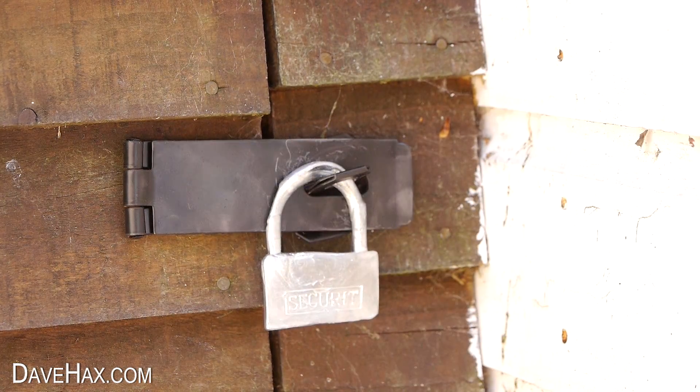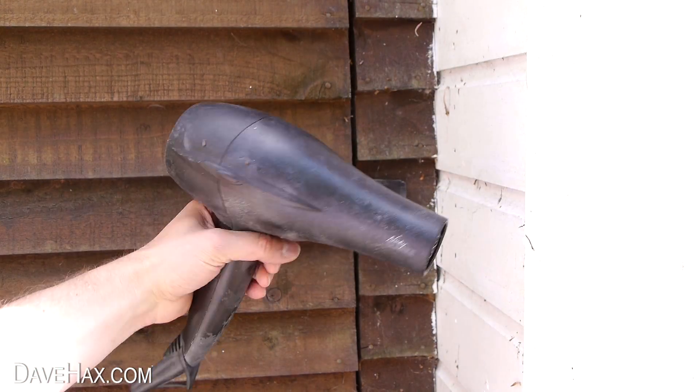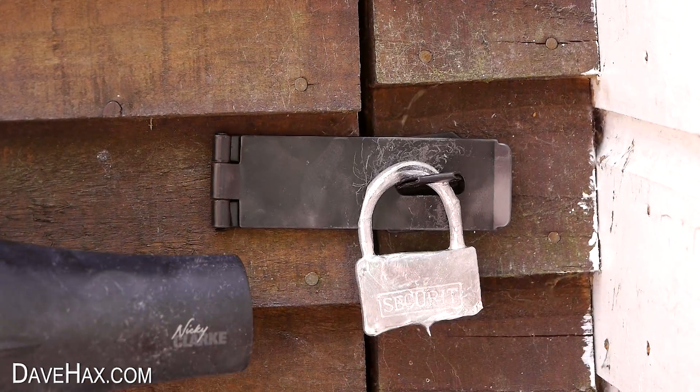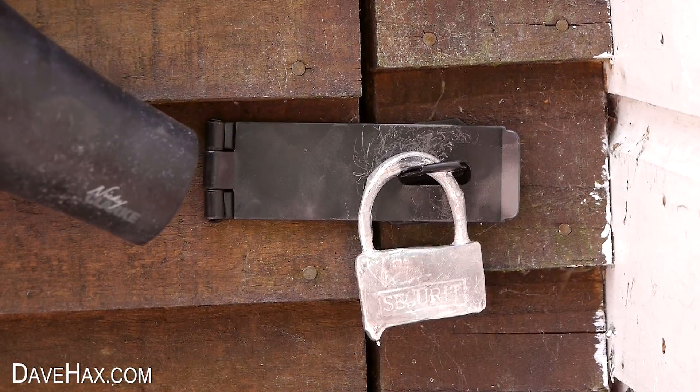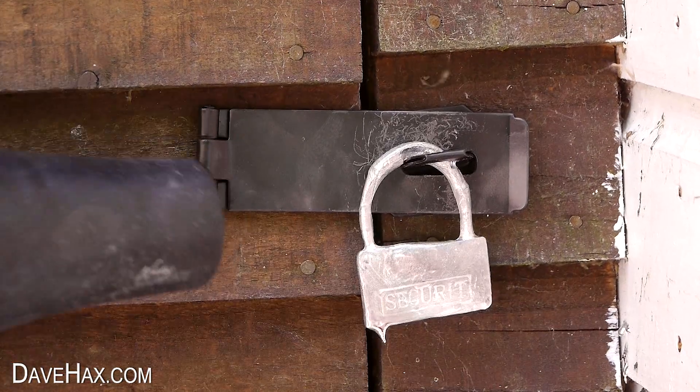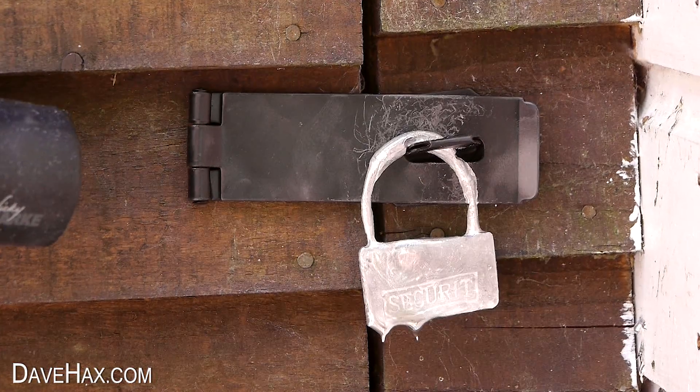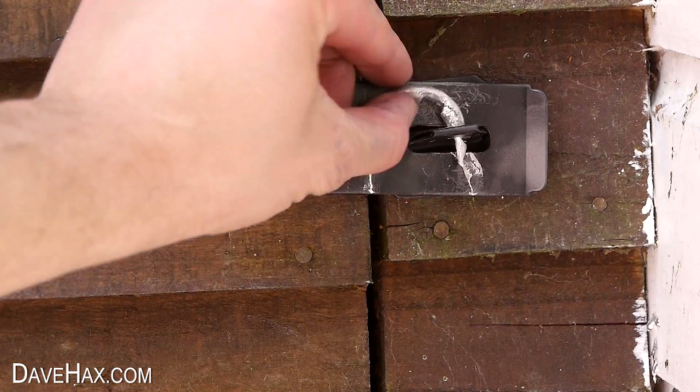You could of course hit it off with a hammer, but for a bit of fun I'm going to melt it off with a hairdryer. You can see the gallium dripping off as it melts. I had a bowl placed underneath to catch it all so I didn't waste any. And it didn't take long before it melted through and the padlock fell off. And we can open the shed.